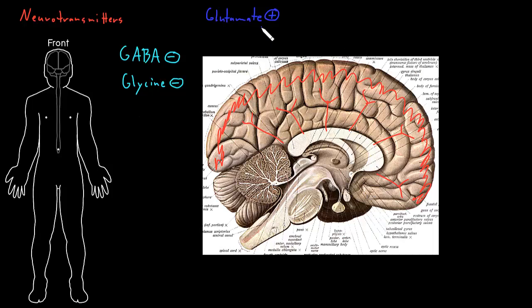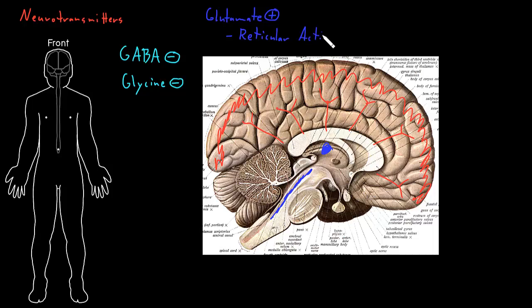Starting with glutamate, there are specific areas in the reticular formation of the brainstem and parts of the thalamus that project axons diffusely up to the cerebral cortex and release glutamate all over neurons there. This collection of neurons with this diffuse glutamate projection to the cerebral cortex is called the reticular activating system, and it is actually required for consciousness — without this system, there usually is no consciousness.